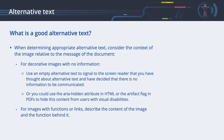Or you could use the ARIA hidden attribute in HTML or the artifact flag in PDFs to hide this content from users with visual disabilities. For images with functions or links, such as form buttons or image maps, describe the content of the image and the function behind it. For example, "activate this button to submit your personal data to the server."